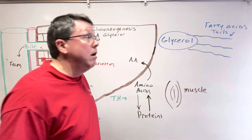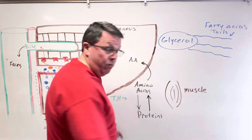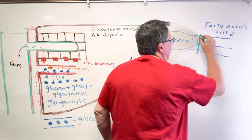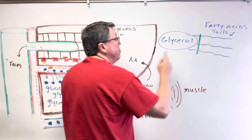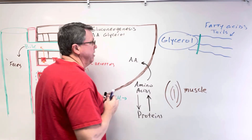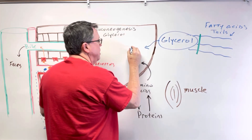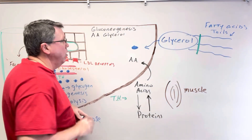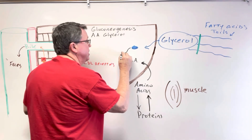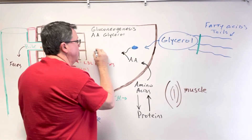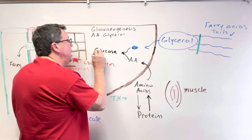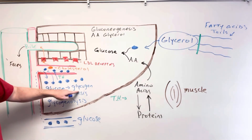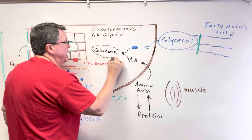Thyroid hormone plays a role in breaking the fatty acid tails from the glycerol. The glycerol then enters the liver, and the thyroid hormone facilitates the glycerol meeting with the amino acids to make glucose. This glucose won't be stored because we're only doing gluconeogenesis when we don't have enough glycogen — so the glucose goes directly into the bloodstream.